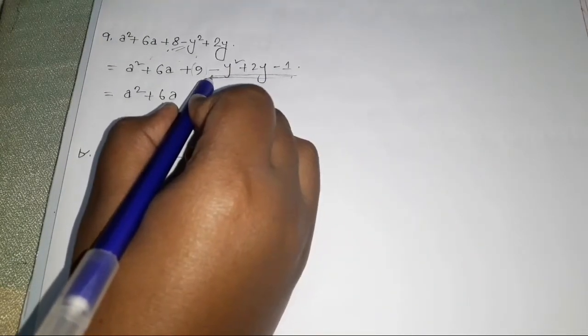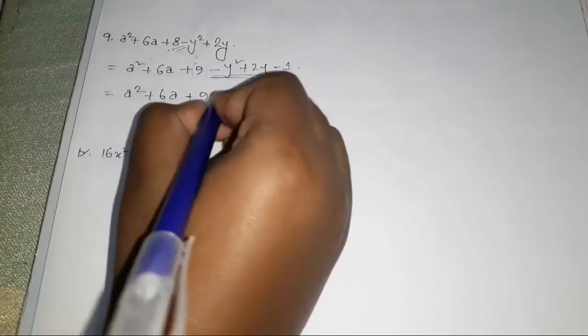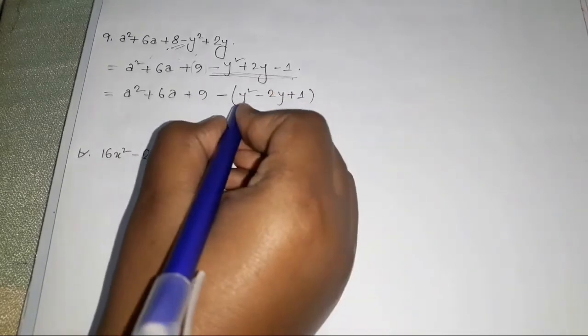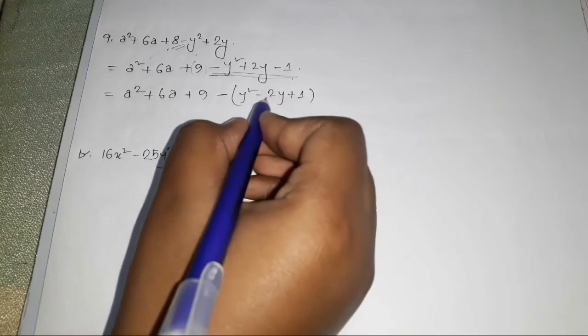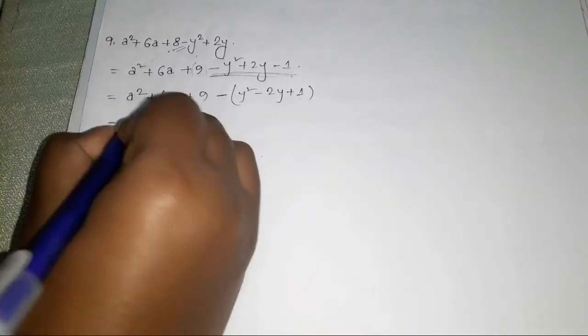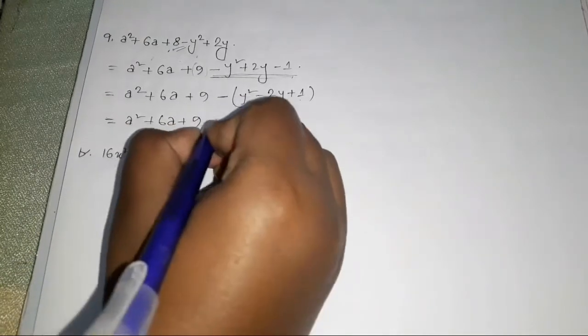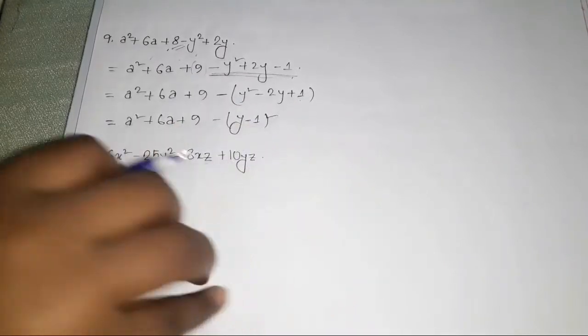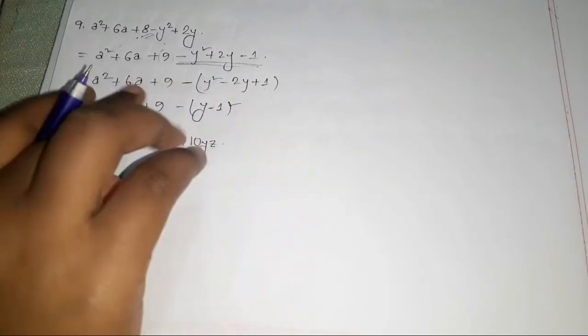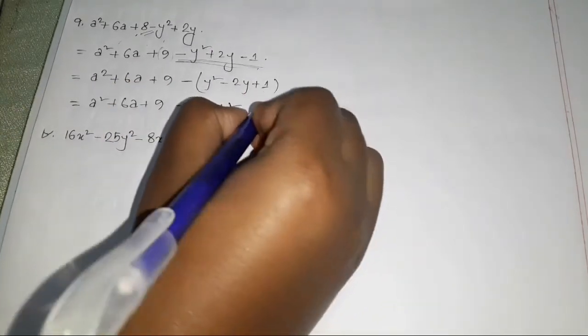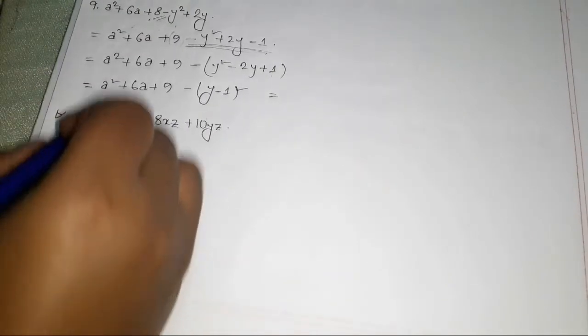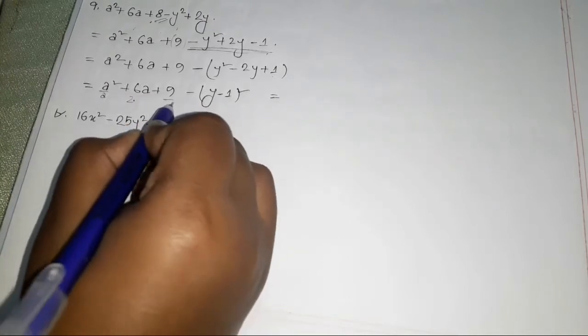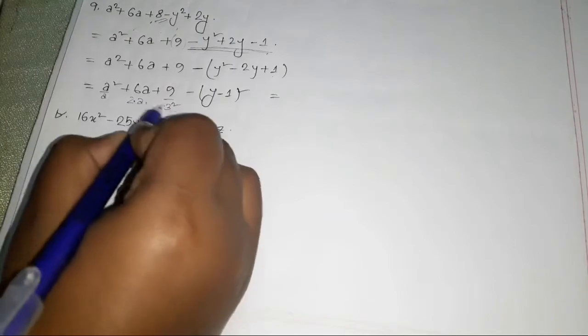Then we have minus y² + 2y - 1, which is minus (y² - 2y + 1), which is minus (y - 1)². So we have (a + 3)² - (y - 1)².